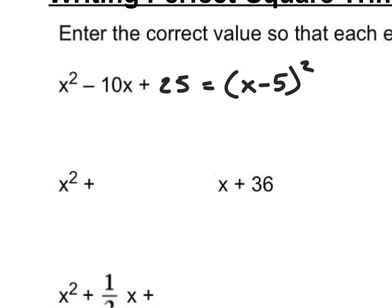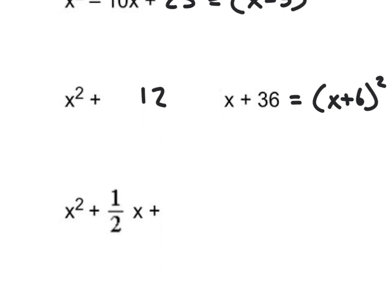Over here: x squared plus what times x gives us 36. What two numbers multiplied together that are the same would give us 36? That would be six. And then six plus six gives us 12. So this as a perfect square binomial would be x plus six quantity squared.